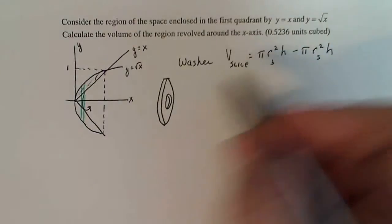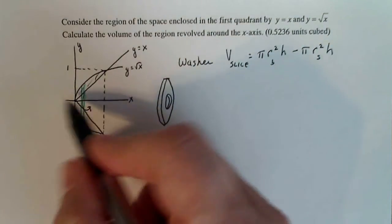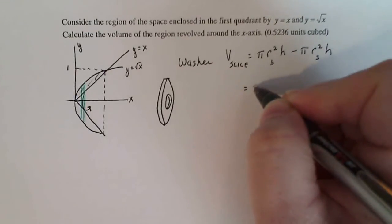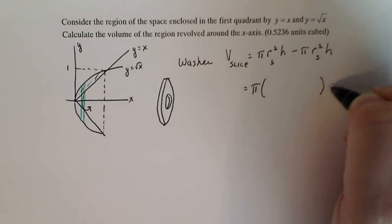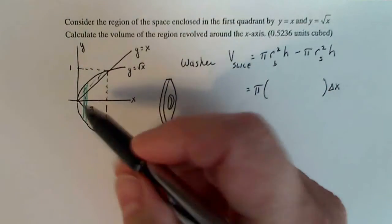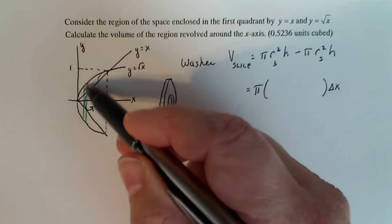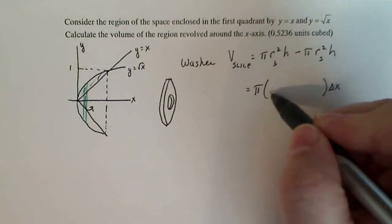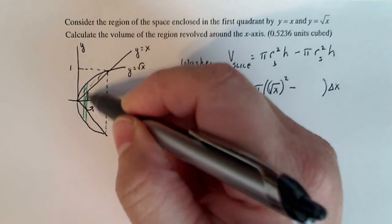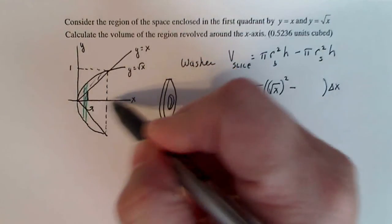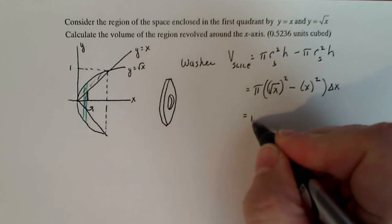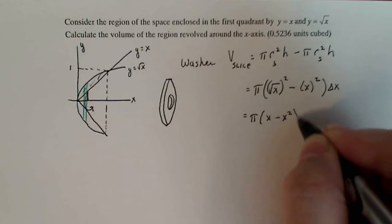H is the thickness of my washer. Since the width is measured along the x-axis, we call h delta x. I can factor out h and pi from both terms, and rewrite it. The radius of my big circle goes from the center to the outer edge, and that length is measured by the graph of y equals square root of x — so square root of x squared — that's my big radius squared, minus my small radius, which is y equals x, so that's x squared. Simplifying, I get pi times (x minus x squared) delta x.